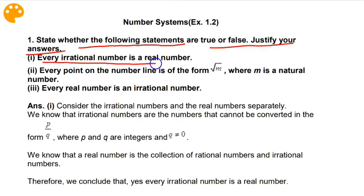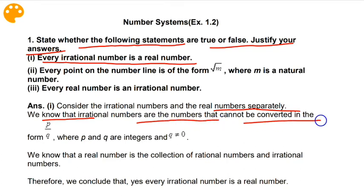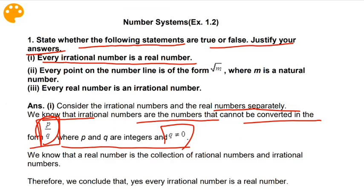Question number one: every irrational number is a real number. Irrational numbers are numbers that can't be converted in the form p/q, where p and q are integers and q is not equal to zero. Rational numbers should be represented in the form p/q where p and q are integers and q is not equal to zero, but irrational numbers cannot. We know that the real number is a collection of rational numbers and irrational numbers.